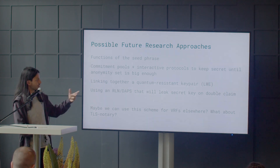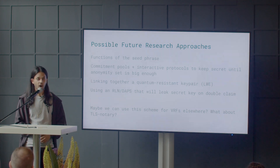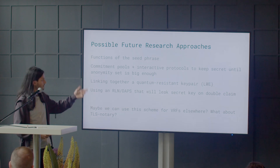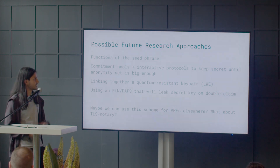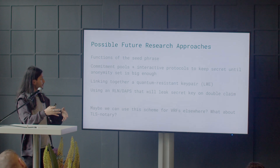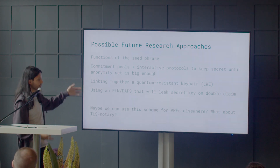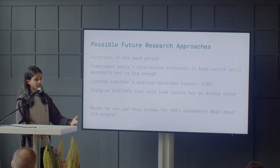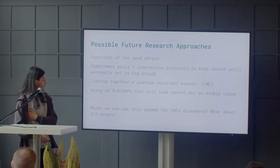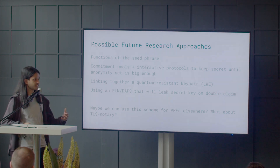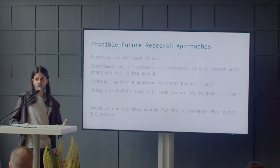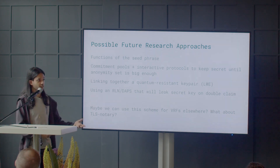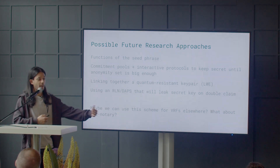There are a bunch of interesting future research approaches: maybe we could use a function of the seed phrase to have a different nullifier; keep everyone's anonymity secret until the anonymity pool is big enough; try to link it with a quantum-resistant key pair; or use something like a rate-limiting nullifier where if someone tried to interact with the protocol twice it would leak their secret key. The DDH-VRF can also be used for deterministic anonymity elsewhere on-chain, beyond just pseudonymous applications.